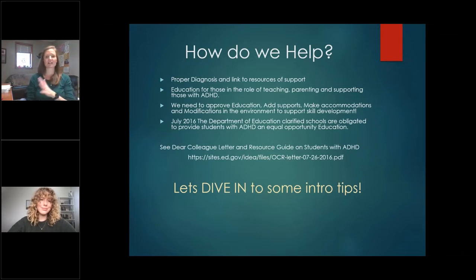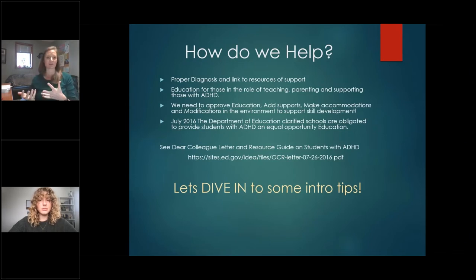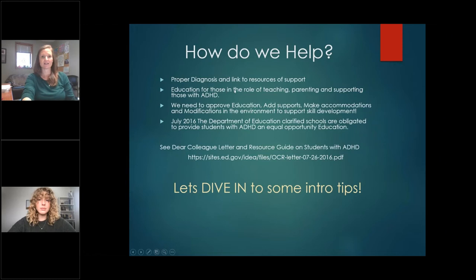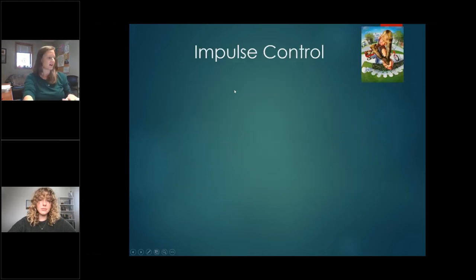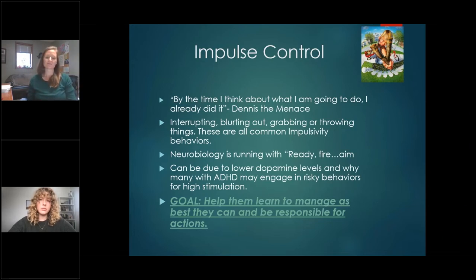We're going to go through executive functioning skills from those that develop earliest all the way to skills that take longer. In the handout I typed out each skill and its definition, but I didn't include the tips and strategies — that's to help with note-taking so you can focus on those. The first executive functioning skill is impulse control, also referred to as response inhibition — the ability to think before you act. This begins developing around six months of age.